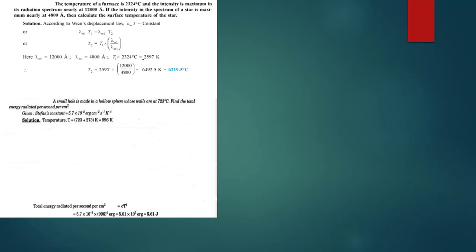Always use absolute temperature. T1 plus 273 gives 2597 Kelvin. Similarly, since the wavelengths are in angstrom, you can convert them to meters — 1 angstrom = 10^-10 — but since they are in a ratio, they will cancel and you don't need to convert. Put in T1 = 2597 Kelvin, wavelength 1 for the furnace is 12,000 angstrom, divided by wavelength 2 for the star which is 4,800 angstrom.